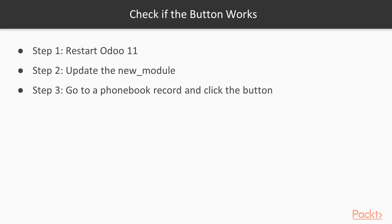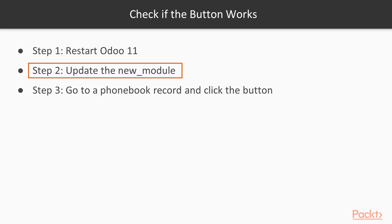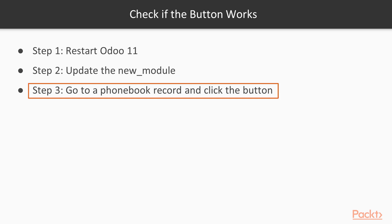Now we need to check if the button works. I am going to restart Odoo 11, or start it if it is not started. Then we are going to update the new module, then open a phonebook record, and we are going to click the button and see if it works.